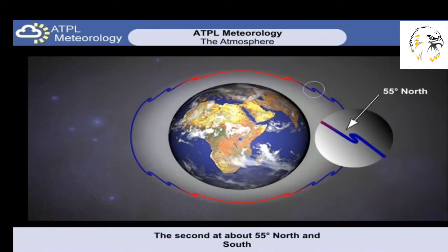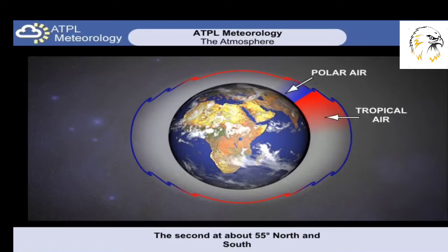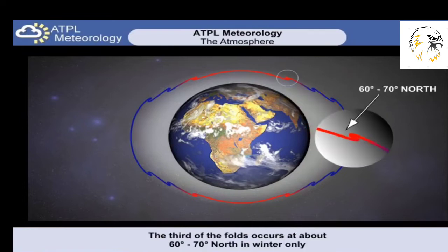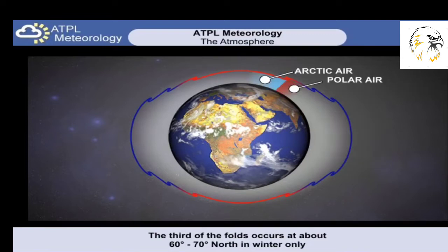The second tropopause break is at higher latitudes of about 55 degrees, where polar air meets tropical air. This happens along the polar front, which we'll talk about much later on. Again, there's enough of a temperature difference within the troposphere to cause a tropopause height change. The last of the tropopause breaks occurs at even higher latitudes, and is evident mainly in the northern hemisphere and in winter. This is where very cold Arctic air meets less cold polar air, occurring typically at about 60 to 70 degrees latitude. The temperature difference here is also enough to cause another tropopause fold or break.